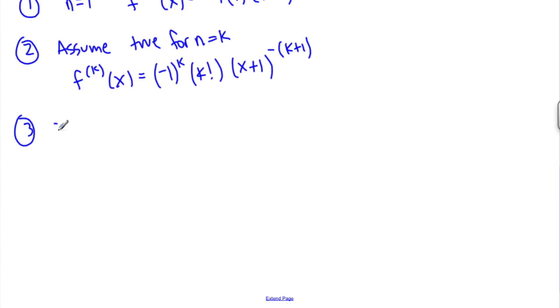And then it says, show true for n equals k plus 1. So, what we need to do is our goal. I'll write a goal over here. f to the k plus 1 derivative should be negative 1 to the k plus 1, k plus 1 factorial, x plus 1 to the minus k plus 2. So, this is our goal.